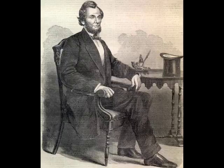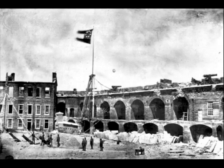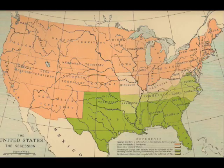However, Lincoln didn't take action until April of 1861, when the shots were fired at Fort Sumter. He sent Union troops to battle, and as a result, Virginia, North Carolina, Tennessee, and Arkansas decided to secede.